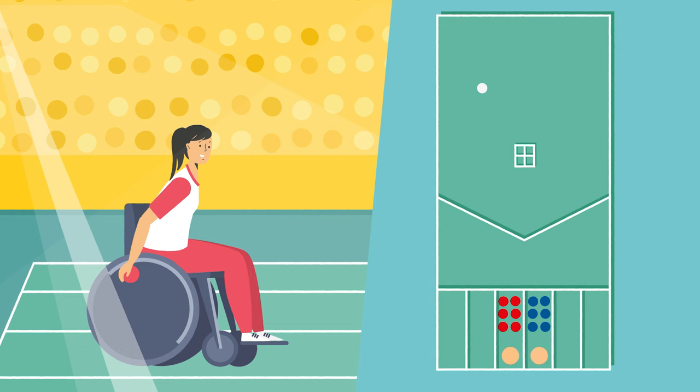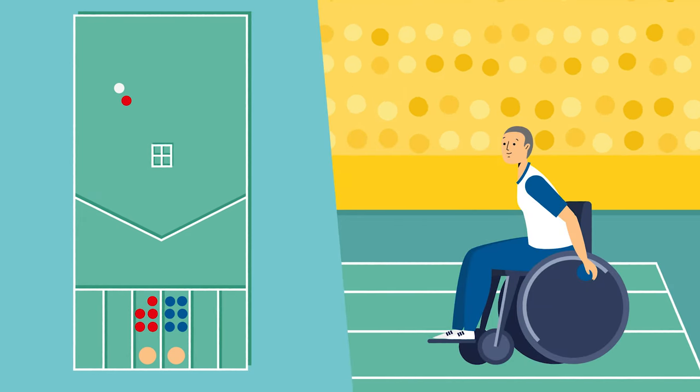One side plays the jack onto the court and then plays their first ball. The aim of the game is to get your balls closer to the white jack ball than your opponent. The side whose ball is not nearest to the jack throws until they get a ball closer or until they run out of balls.